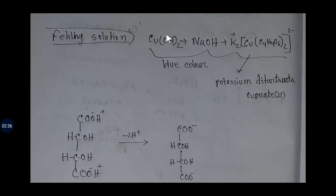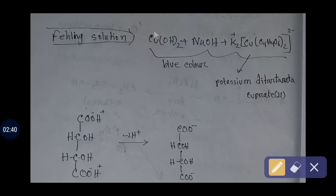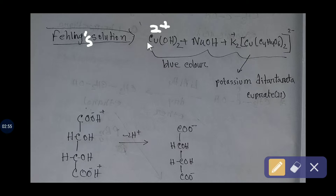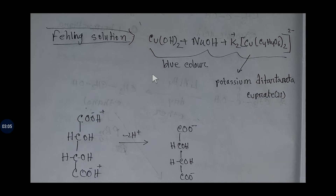In the Fehling's solution, the oxidation state of copper is 2 plus. This 2 plus copper ion acts as the oxidizing agent. Now we will see the reaction between aldehyde and Fehling's solution.